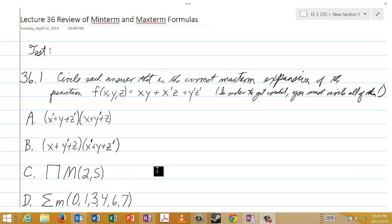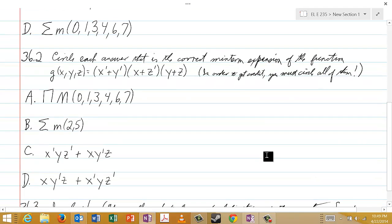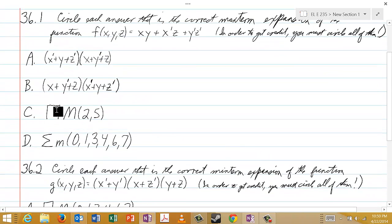And c is, let's see, for some reason this is not scrolling properly here, there we go. Okay, c, this is the symbol of course for a product of capital M two and five, and this is the symbol for the sum of little m zero, one, three, four, six, and seven.